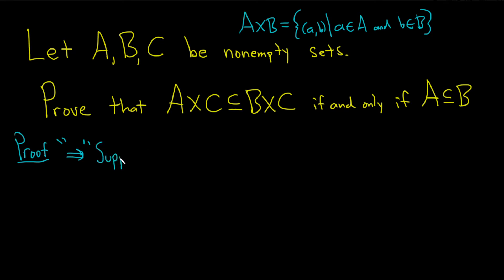So suppose that A cross C is a subset of B cross C. Okay that's our first assumption and we have to show that A is a subset of B. So let me just write that down. So claim A is a subset of B.